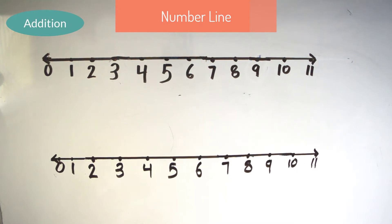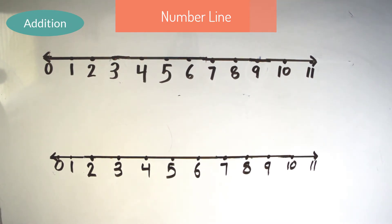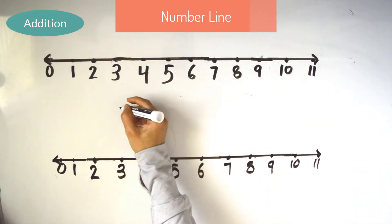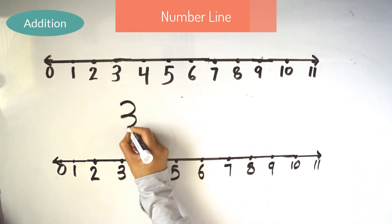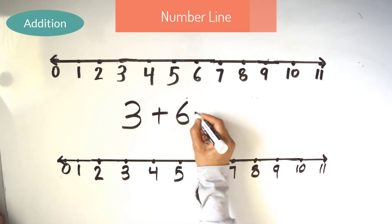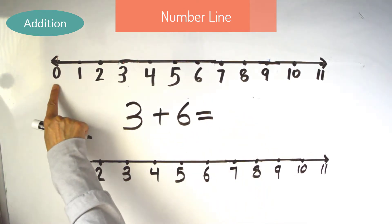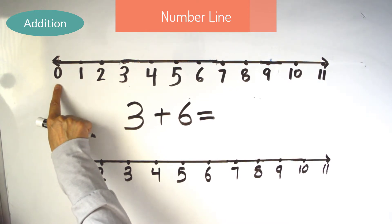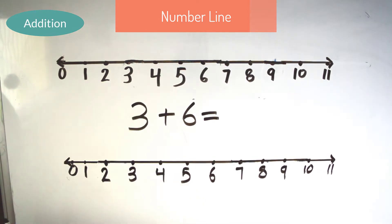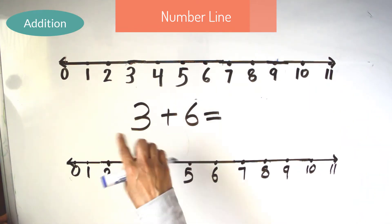Number Line. Let's use a number line to add. Let's add 3 plus 6 on a number line. Always start from 0 when you add on a number line. Our first digit is 3, so let's jump 3 times.